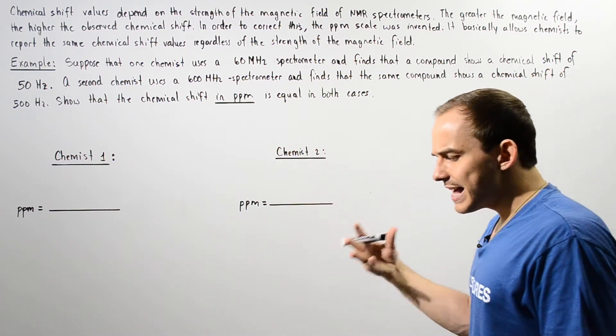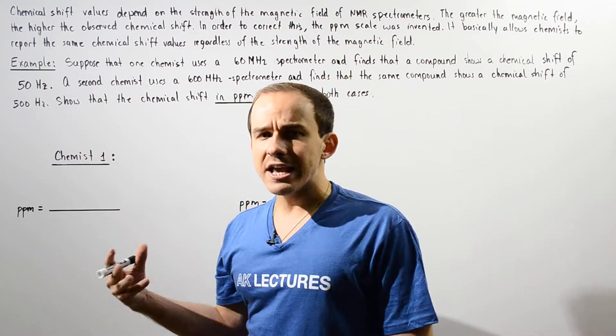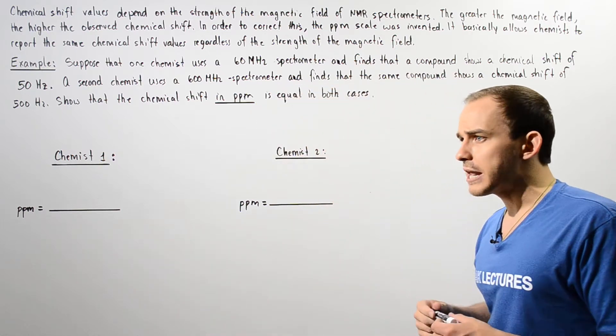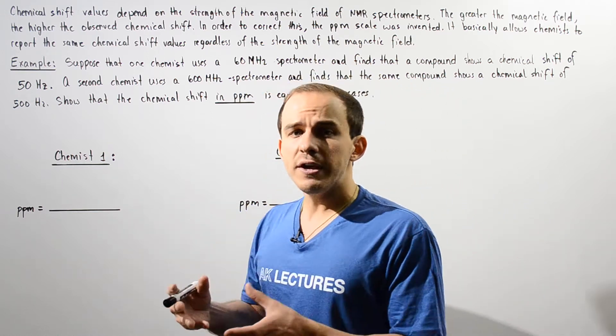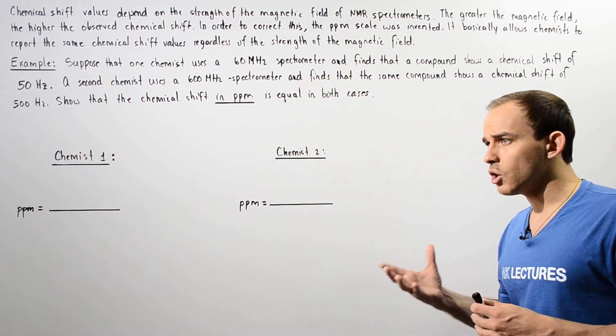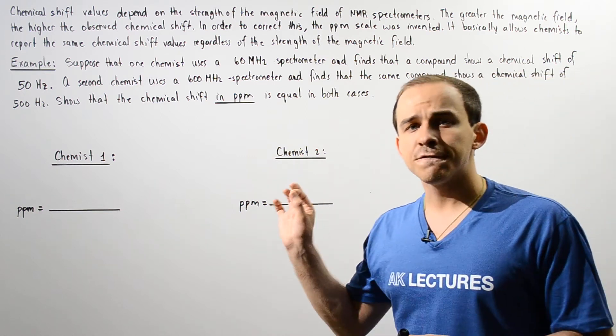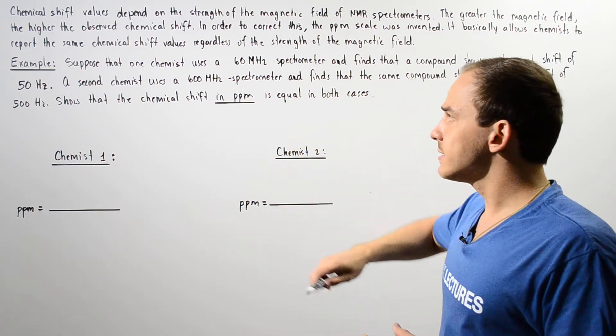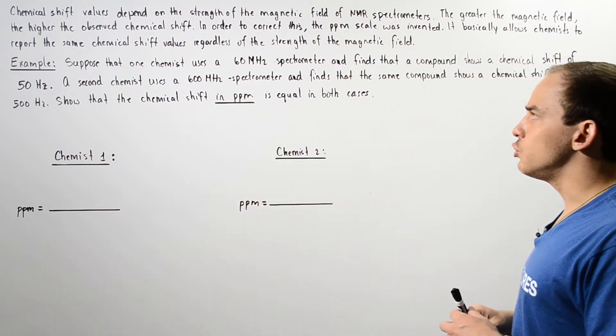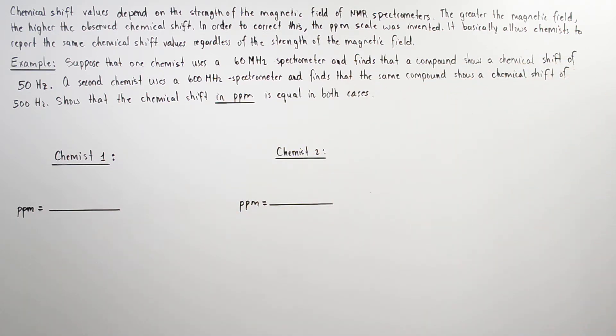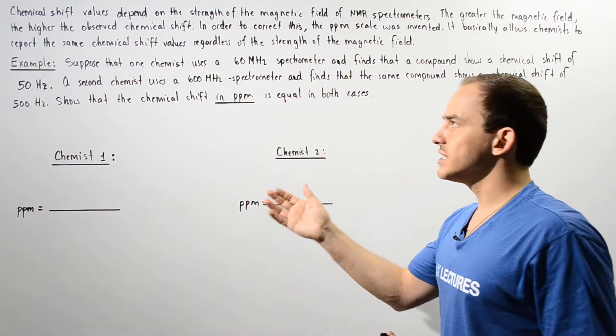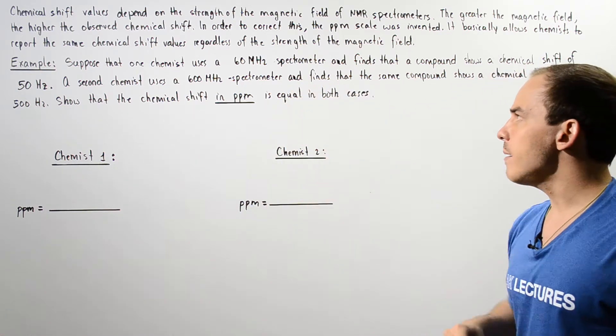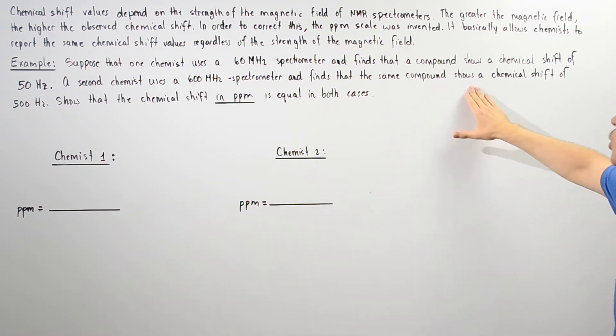Now usually instead of designating the strength of our magnetic field inside that proton NMR spectrometer in Tesla's, we basically designate the strength of that particular proton NMR spectrometer in our frequency.